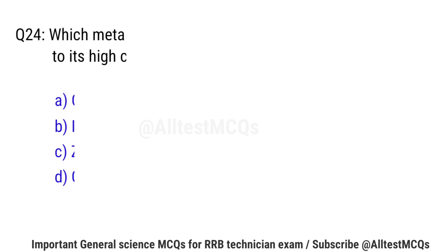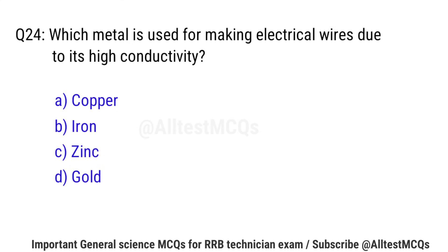Question No. 24: Which metal is used for making electrical wires due to its high conductivity? Right option is A: Copper.